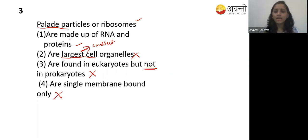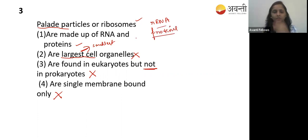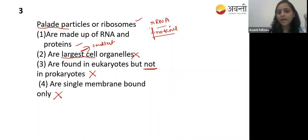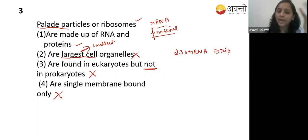The correct answer is that ribosomes are made up of RNA and protein - we call it ribosomal RNA, or rRNA. There are many rRNA types: 5S rRNA, 5.8S rRNA, 23S rRNA, and others. The 23S rRNA has ribosome activity - it synthesizes protein in bacteria - which we also call peptidyl transferase activity.